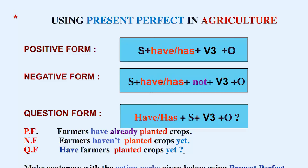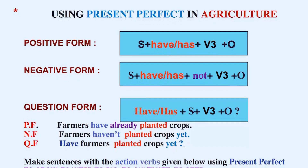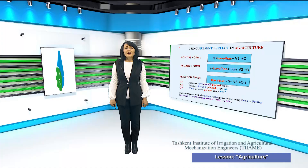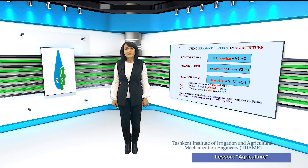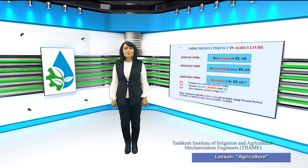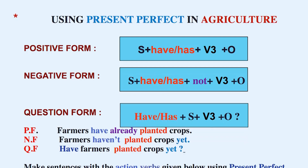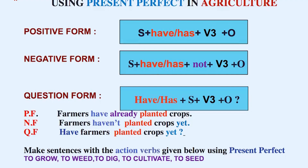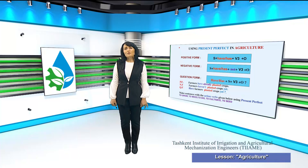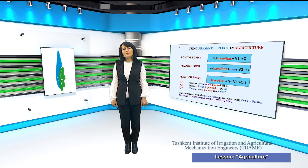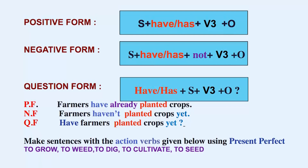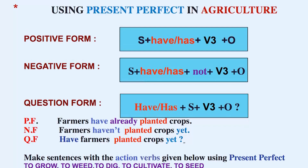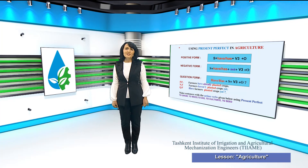Now let me move to the next slide — it's about present perfect. You can practice the usage of present perfect: revision of grammar through content, through agriculture. Present perfect is used for actions that started in the past and continue now, and for actions in the past when the time period is not finished. In positive form: subject + have/has + verb 3 (past participle) + object. In negative form, add 'not' after have/has. In question form, put have/has before the subject. For example: 'Farmers have already planted crops.' Negative: 'Farmers haven't planted crops yet.' Question: 'Have farmers planted crops yet?' Please pay attention to the correct structure given in this slide.